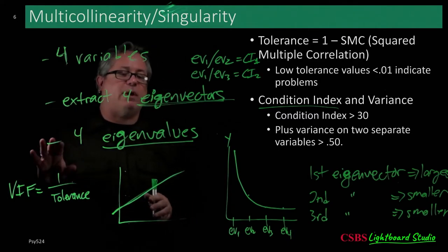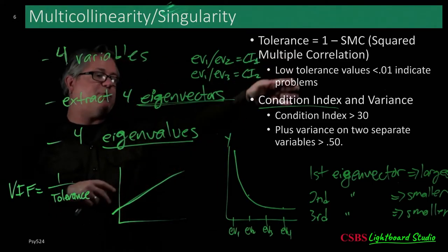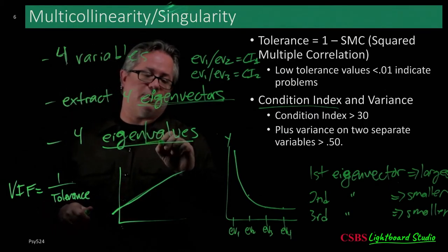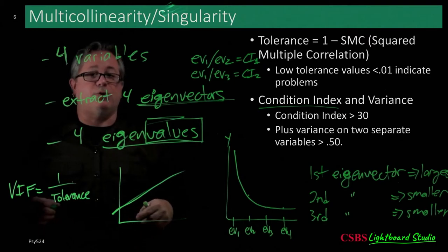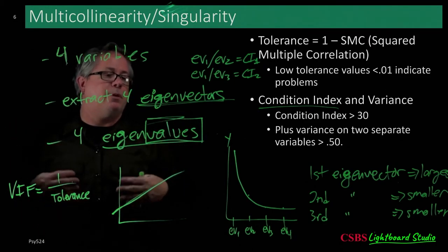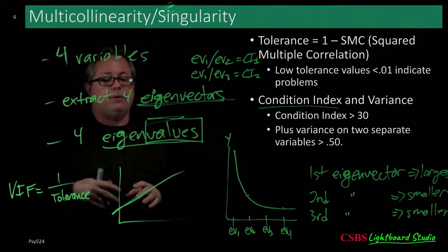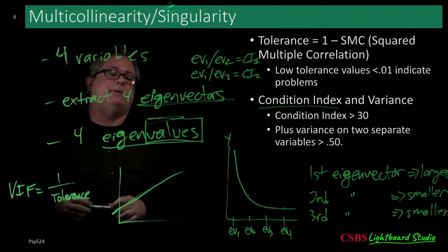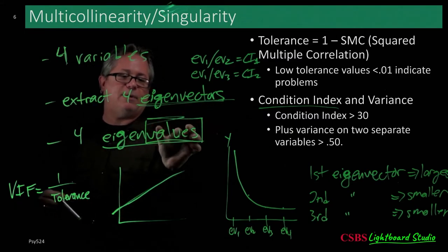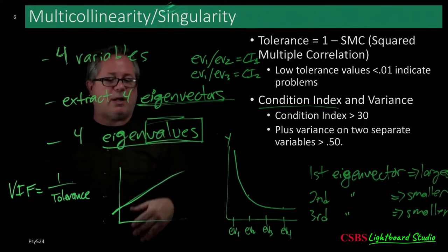If eigenvectors are confusing, don't worry — just think of it as a line projected out in space. For each line, there's a value — the eigenvalue — indicating how well that vector explains a lot of variables with one single projection. The larger the eigenvalue, the more variance that vector explains. This concept will come back when we discuss factor analysis.